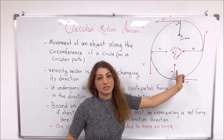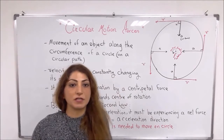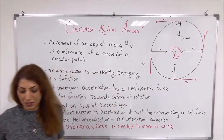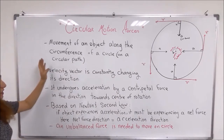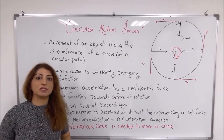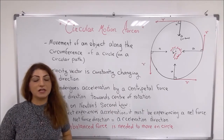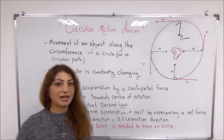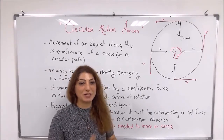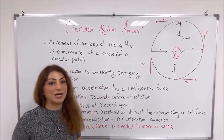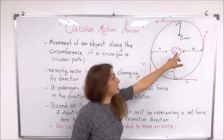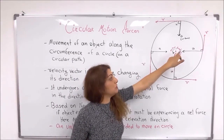The circumference of a circle is given by 2πr. It means that the distance an object travels on a circle is equal to the circumference of that circle. So don't forget: if you are asked about the distance covered in circular motion, you should calculate the circumference of that circle. Here is the center of rotation, as I have shown to you.